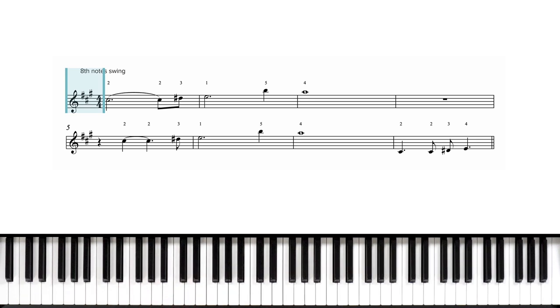Our time signature says 4-4, also known as common time. That's four beats per measure, and the quarter note gets the beat. Now, notice the note we have there above the key signature and time signature. It says eighth notes swing, so we're going to be feeling these eighth notes with a swing feel.